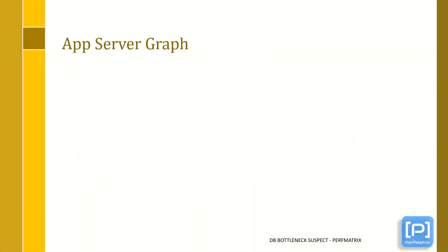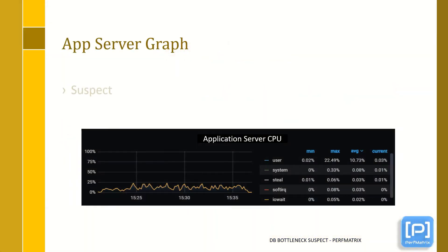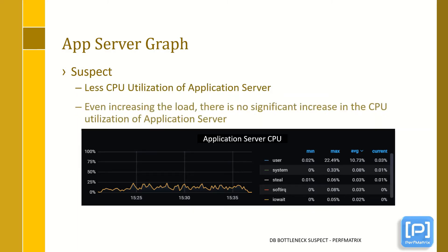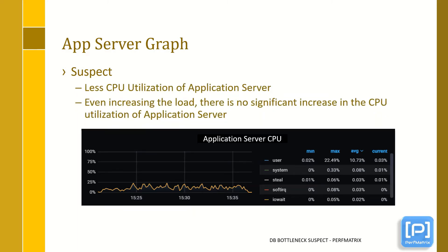Starting with the suspect part. In case you get continuous low CPU utilization on the application server, and even when you increase the load gradually, you do not see any significant changes in the CPU utilization graph, then it shows that saturation has occurred. The application server is not being utilized properly even though the load is increasing, as you can see in this graph.